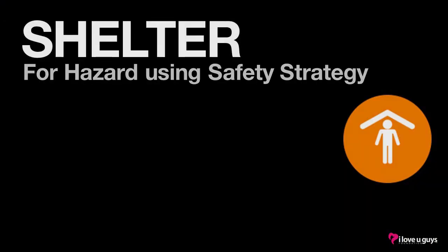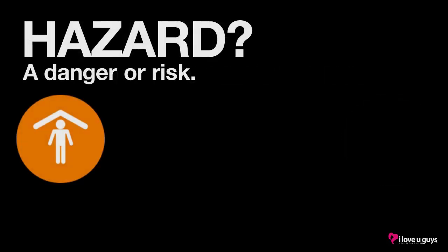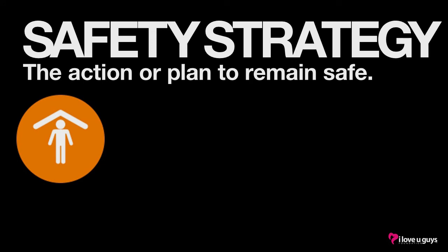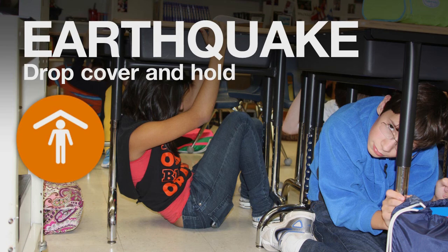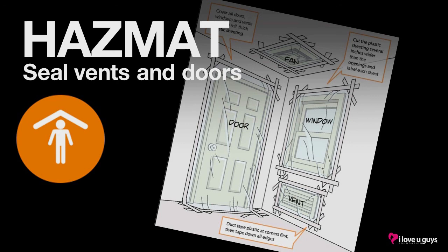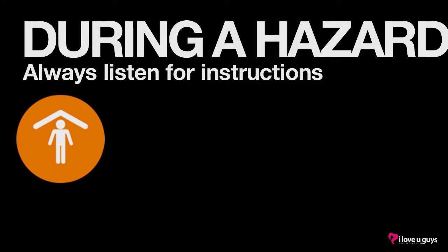For shelter, you will hear the PA announce shelter for the specific hazard and what safety strategy to use. A hazard is something dangerous — it could be environmental, like a tornado or earthquake, or something like a chemical spill nearby. Your safety strategy is what you do in response to the hazard. The public address might state just the hazard and safety strategy, or it could be: shelter for the stated hazard using the stated safety strategy — and it will be repeated. For example: tornado, get to the storm shelter. For an earthquake, the safety strategy is drop, cover, and hold. For a hazmat risk, we would seal the room by taping plastic around doors, vents, and windows. Listen for instructions, as the situation may be very dynamic. During a shelter event, teachers should try to take attendance and note the time.